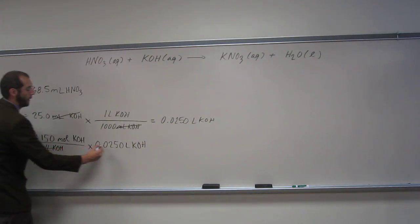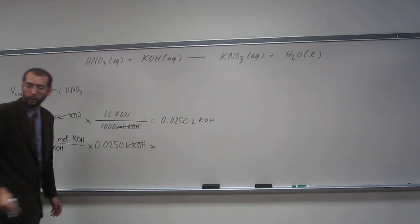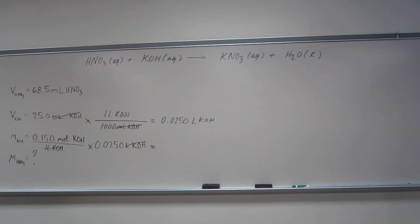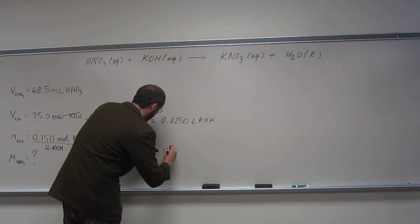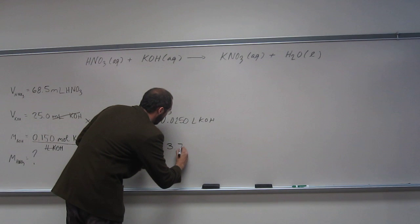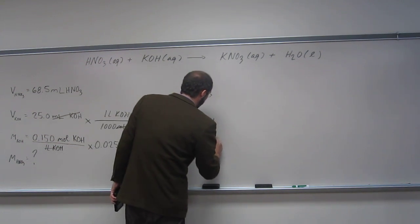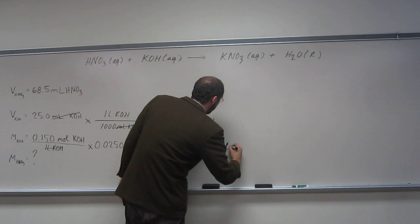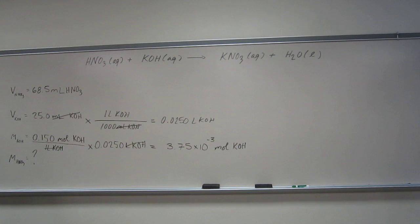Multiply by 0.0250 liters of KOH. So when I do that, liters cancel with liters there. You guys see that? And I get some number that we're about to calculate now. So 0.15 times 0.025. So 3.75 times 10 to the negative 3 moles KOH. So we know the number of moles of KOH. Is everybody okay there?